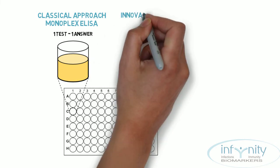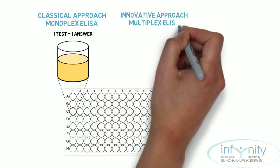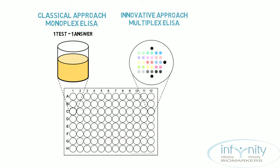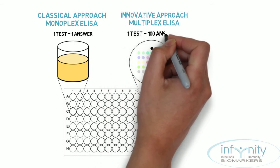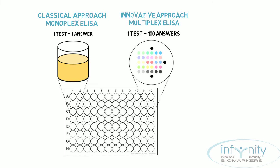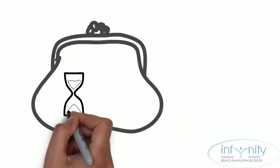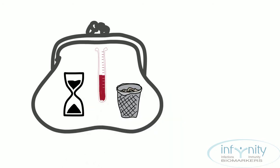A more innovative approach is to design a multiplex immunoassay. In contrast to the standard ELISA, multiplex technology allows to obtain, in one test, up to 100 different answers with an increased sensitivity. So, following this comparison, we have significantly reduced time, reagents, and waste.